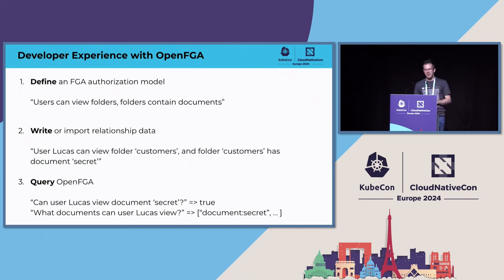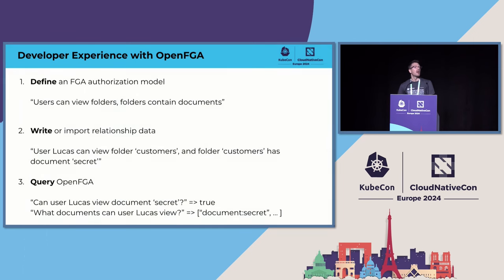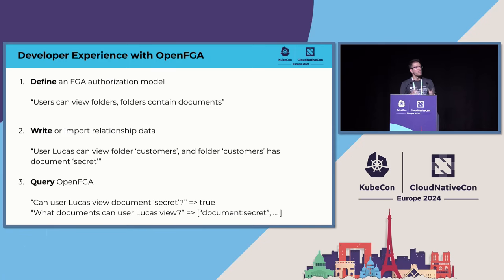The second thing you do after defining a model is write or import relationship data — the data that governs access control decisions in your applications. These might be relationships like a user having a role or a user having been shared access to a document. OpenFGA becomes an extension of your application databases specifically for permission data, optimized to answer those permission questions. The third thing you do is query OpenFGA — ask it for an authorization decision.